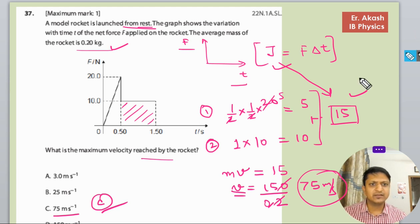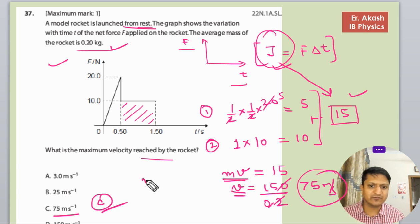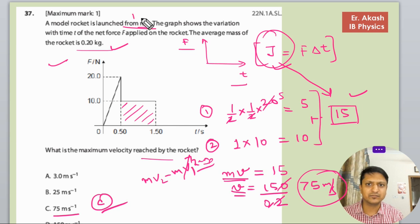First, see that the graph that is given to us, the area under the curve is impulse. And impulse is the change in momentum. So what we have done is we have done MV2 minus MV1, and V1 is 0 because it is from rest. The initial velocity is 0, so we have directly taken MV.